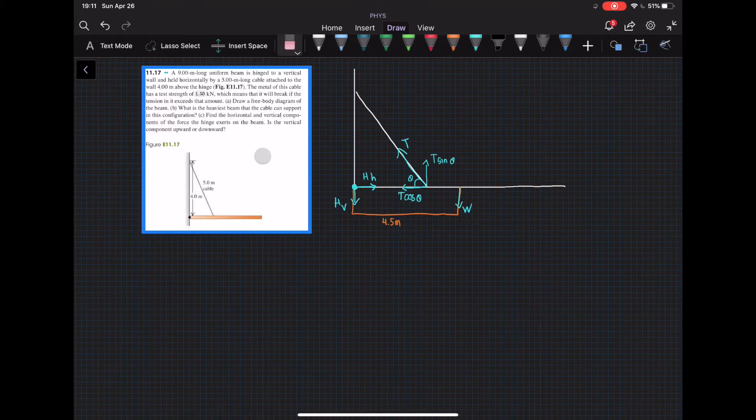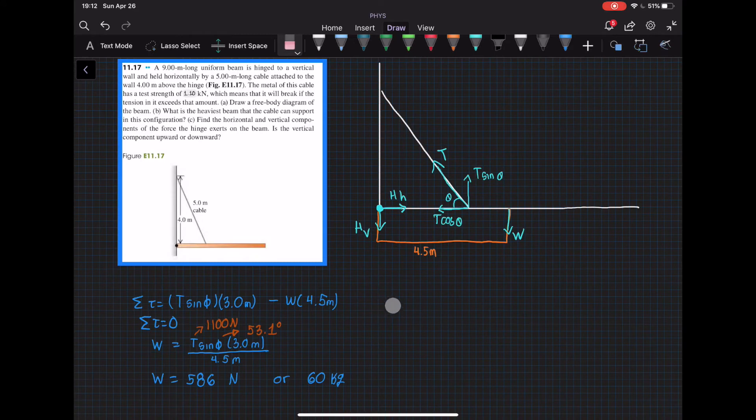For part B, it's asking what is the heaviest beam that the cable can support in this configuration. For this, we'll be rotating around the hinge so that force is canceled out. We have a positive torque which is the T tension times the distance which is 3 meters.